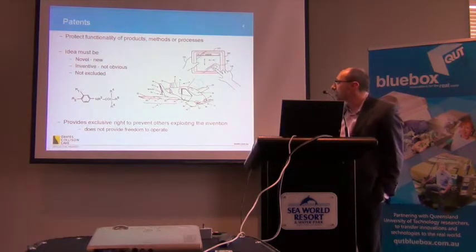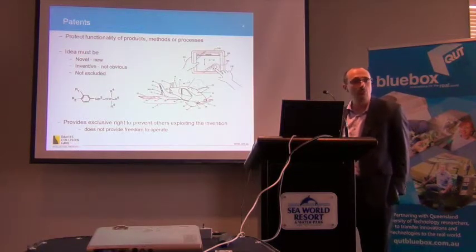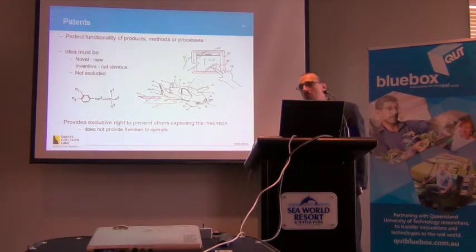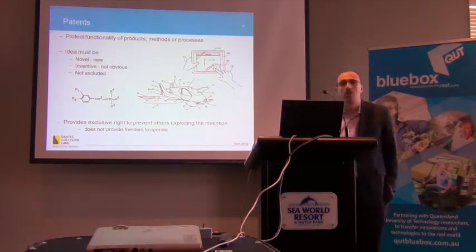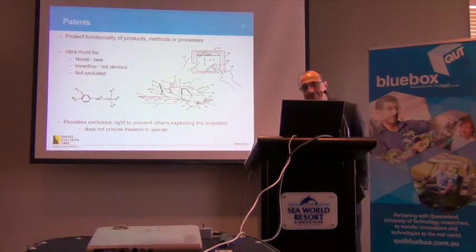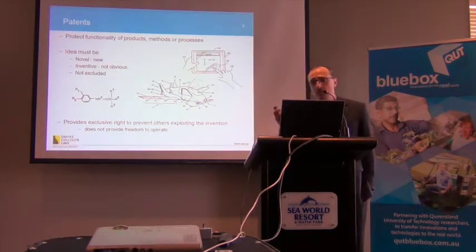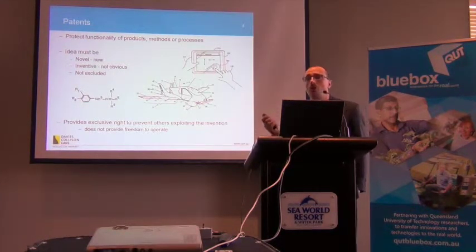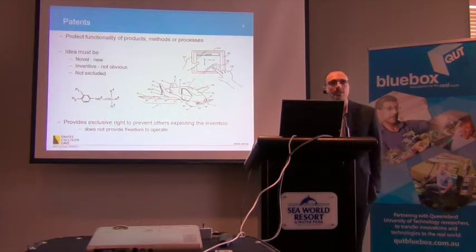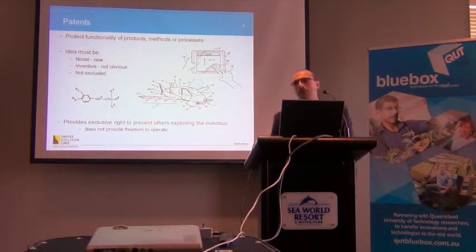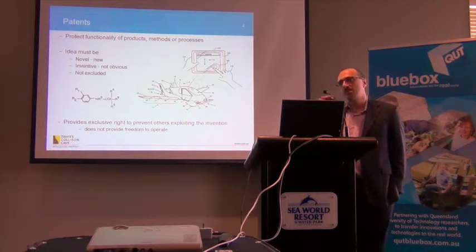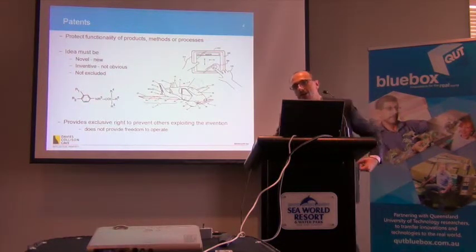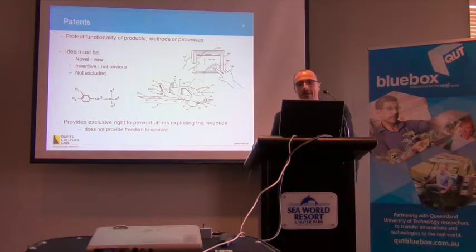In order to get protection, your idea has got to be novel — and that just means new. If all chairs in the world were blue, a black chair would be novel. It's as straightforward as that. But it's also got to be non-obvious, or inventive. Clearly a blue chair would be an obvious development of a black chair. But if all chairs were like bar stools and just had something to sit on, putting a back and arms on the chair might not be obvious — you might be able to protect that.